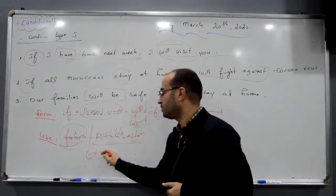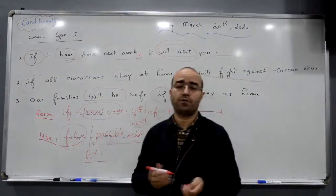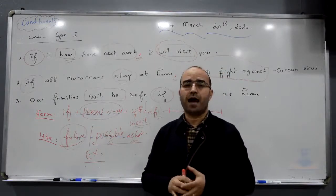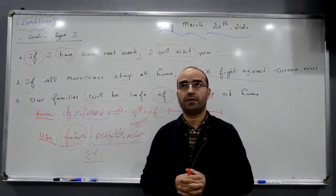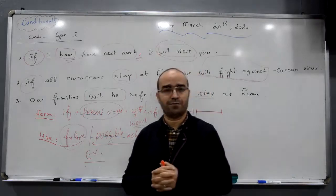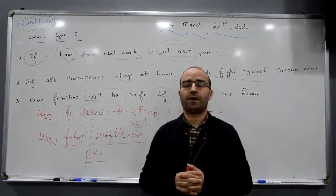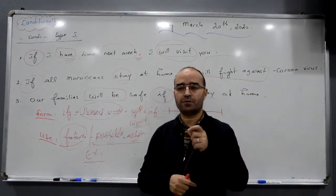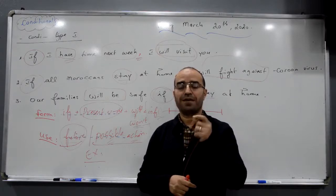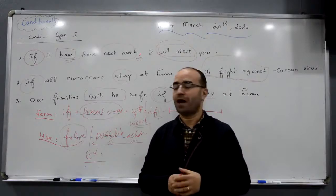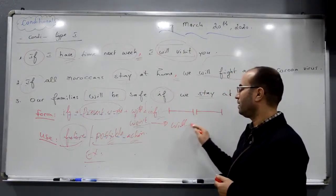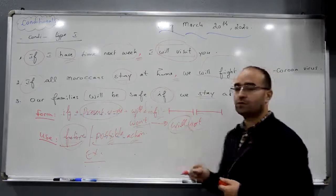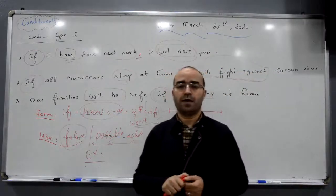As examples: I don't have money, I can't buy a Lamborghini. If I have money, I will buy a Lamborghini. If I don't have your telephone number, I can't contact you. If I have your telephone number, I will contact you. Negative form: if I don't have your telephone number, I won't contact you. 'Won't' means 'will not'.